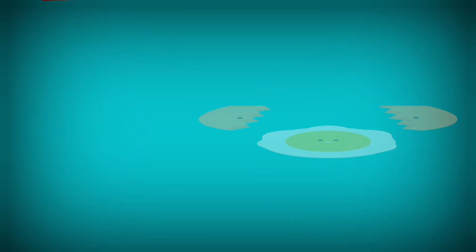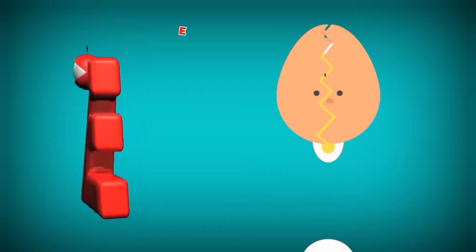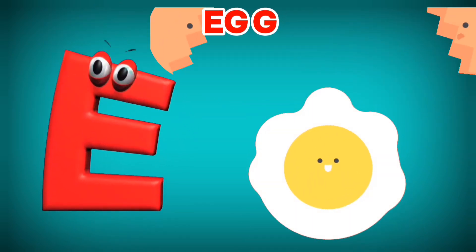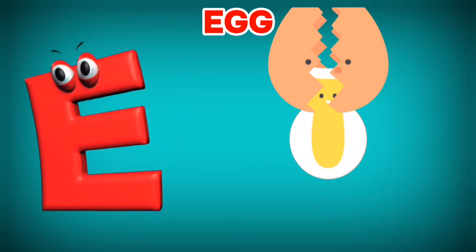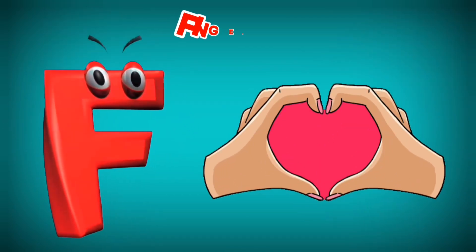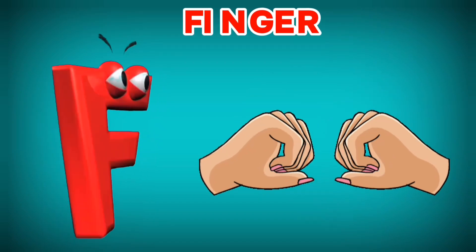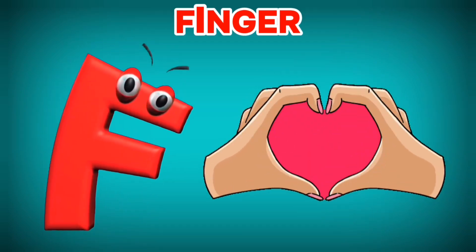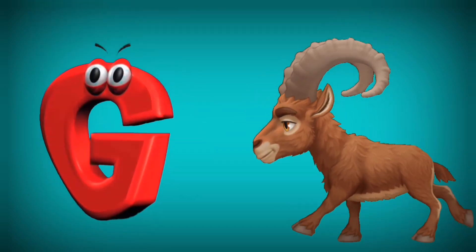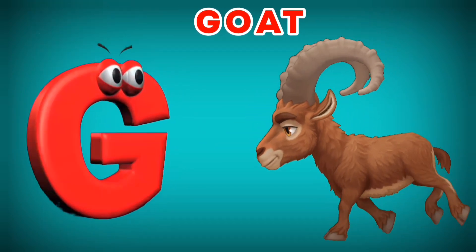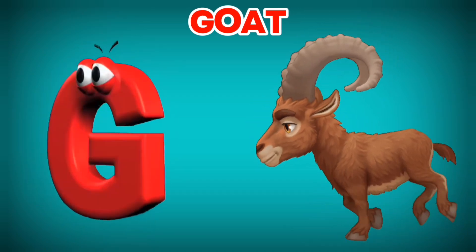Dolphin. E is for Egg. E, E. Egg. F is for Finger. F, F. Finger. G is for Goat. G, G. Goat.